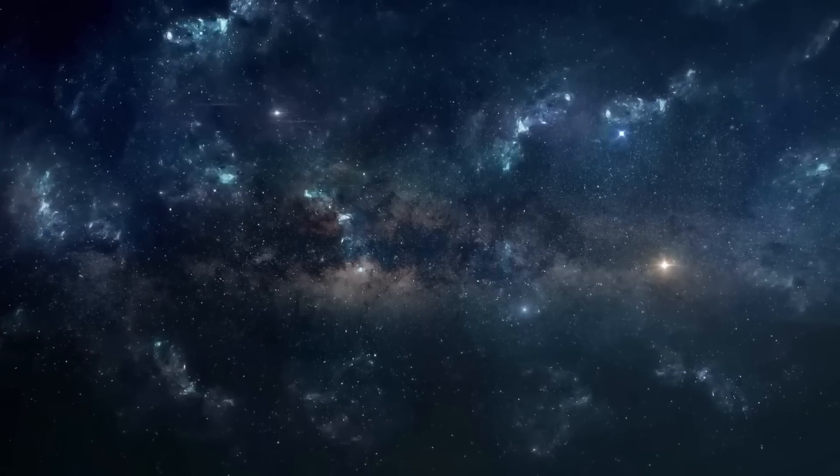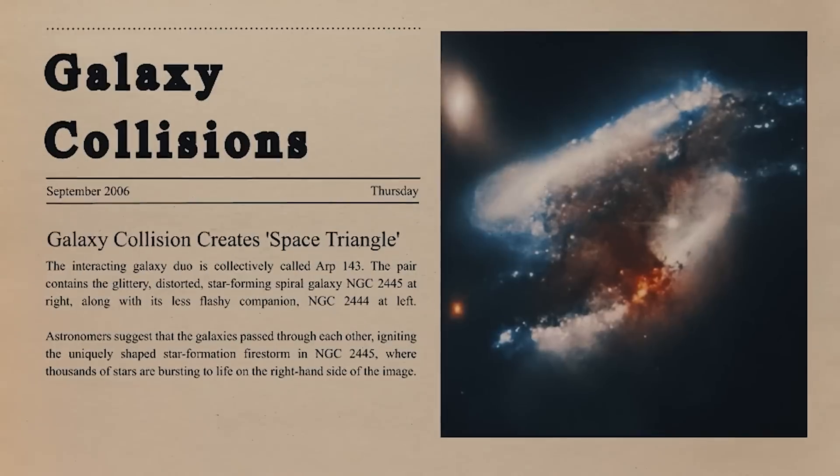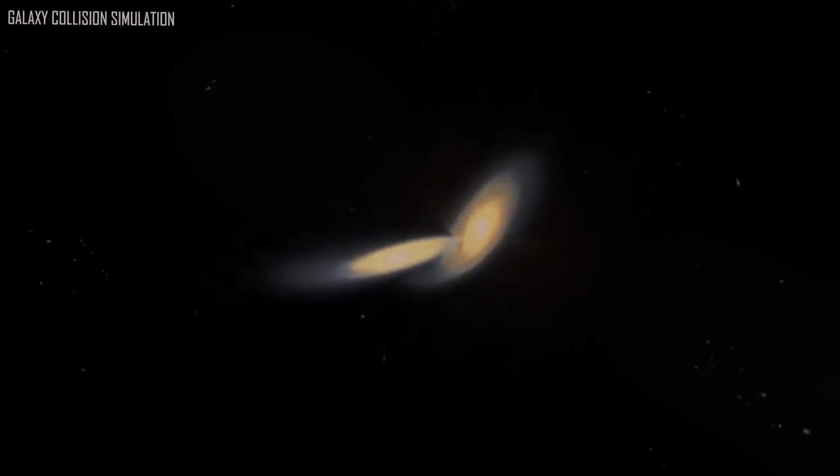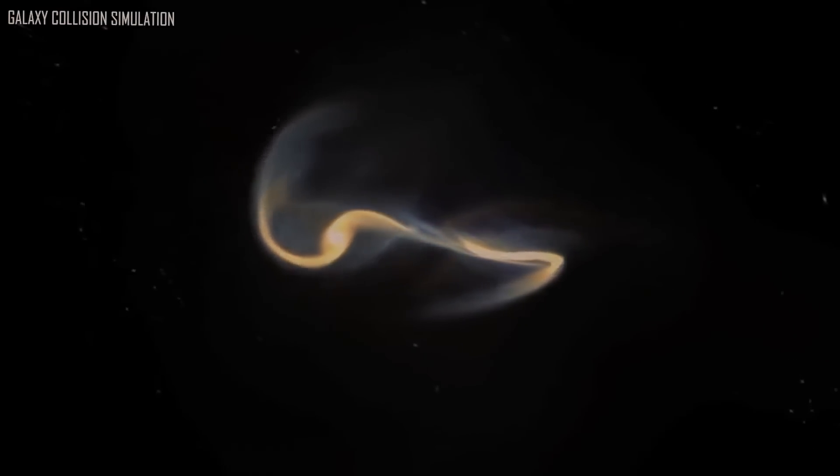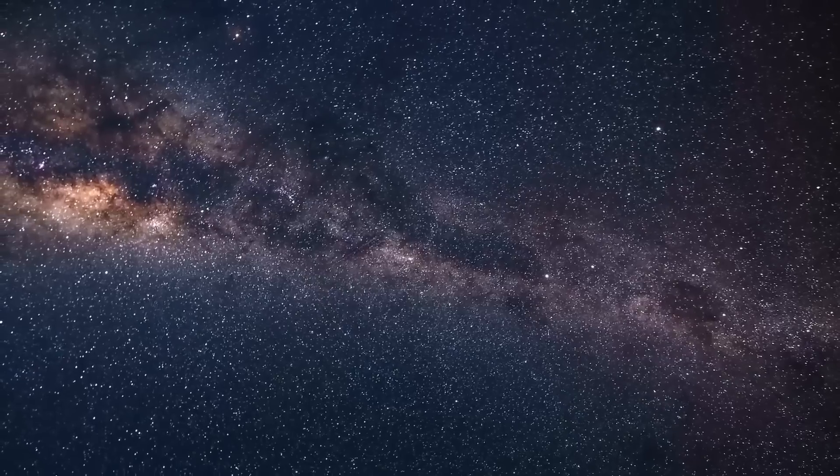Andromeda and the Milky Way are on a collision track that will permanently change the structure of the two galaxies. The galaxies are approaching one other at around 70 miles per second, 112 kilometers per second. Astronomers predict Andromeda will collide with the Milky Way within 4 billion years, with the merger complete in 6 billion years.